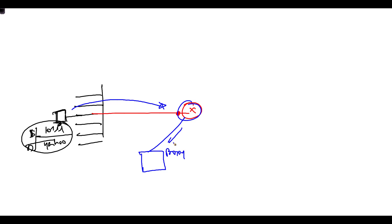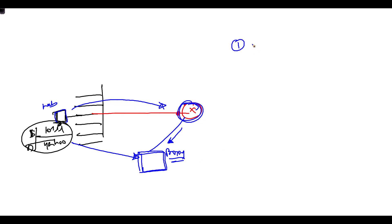There are multiple ways to configure this. You can either configure the web browser to send the request directly to the proxy, or configure the router to redirect traffic to the proxy. Most application-level gateways support two main features.